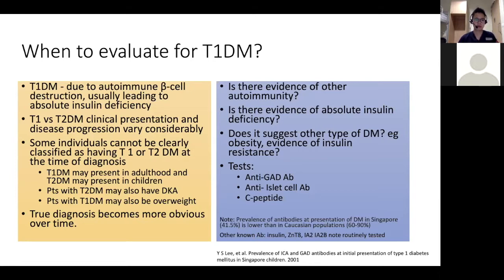In hospital, we see a lot of patients with type 2 who have DKA, and also a lot of patients with type 1 who are more overweight. So it's very difficult to tell. The true diagnosis — whether this patient has an absolute insulin deficiency — will only become more obvious as time goes on as you follow the patient up longitudinally.